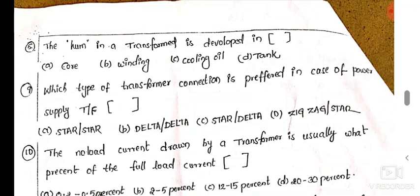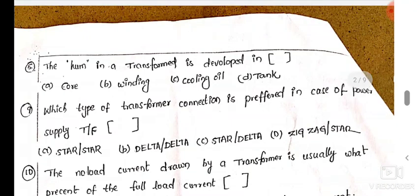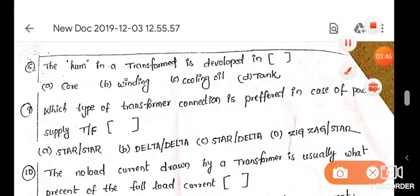The hum in transformers is developed where? In the core, winding, cooling oil, or tank. This is the core, the laminations. This is the gap air sound.